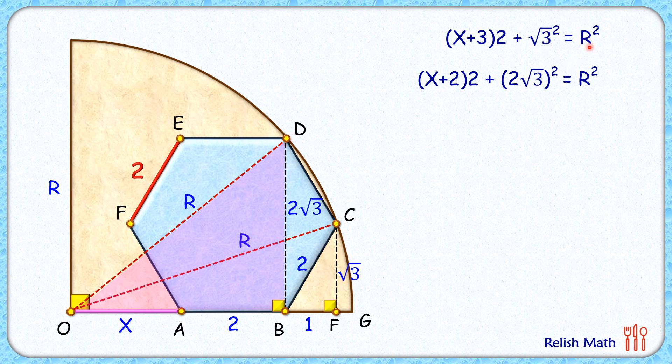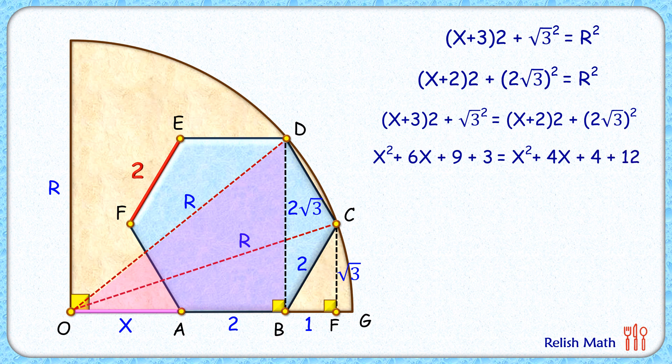Both the right-hand sides are equal, so comparing the left-hand sides we will get this equation. Simplifying it by opening the brackets, we'll get an equation in this form. Now both sides x² will get cancelled. Simplifying it, we'll get 2x = 4, or x = 2 centimeters.